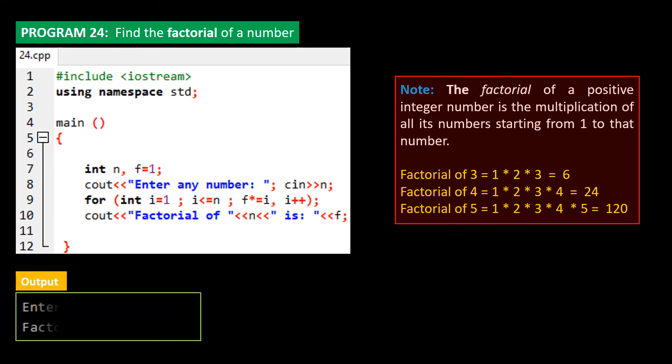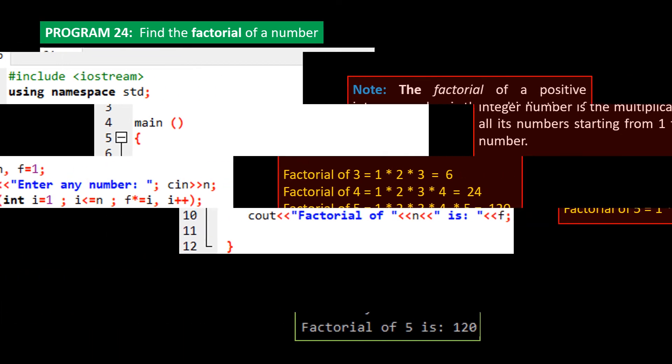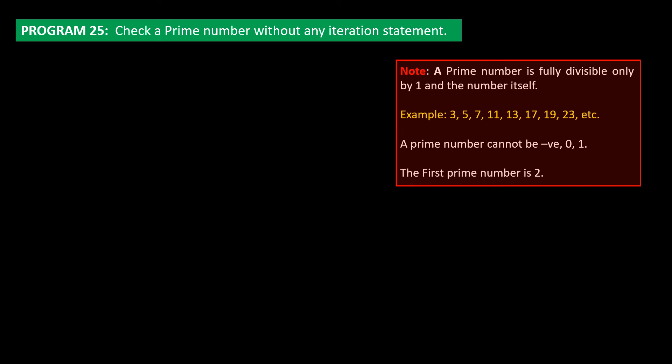Program 25. Requirement is to check a prime number without any iteration statement. Note that a prime number is fully divisible only by 1 and the number itself. For example, 3, 5, 7, 11, 13, 17, 19, 23 are all prime numbers. Also note that a prime number cannot be negative number, 0, or 1, and that the first prime number is 2. In this program, it is hinted to use the goto statement. In the next program, we will be writing the same program without goto statement. Logic is to divide any given number first by 2, then up to half that number. And if no number fully divides it, then that number is prime. This is how the output would look like.